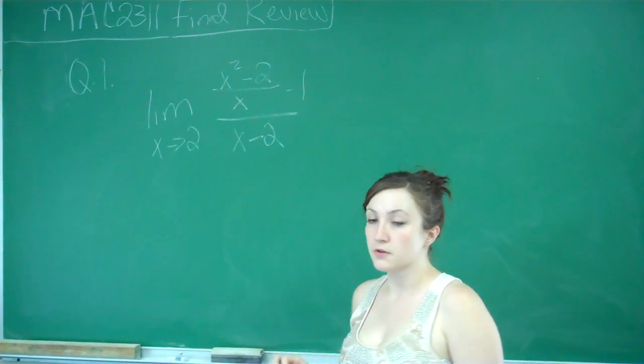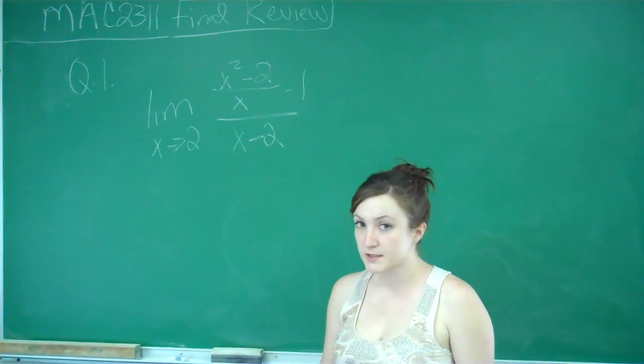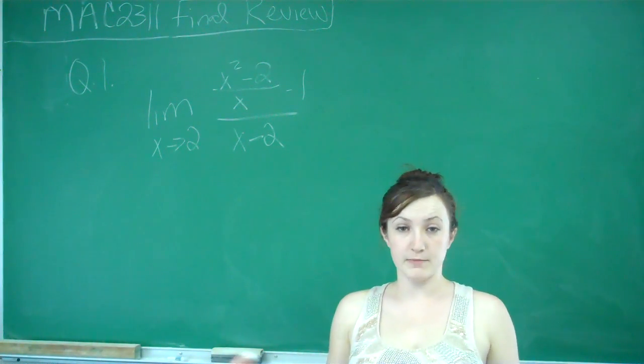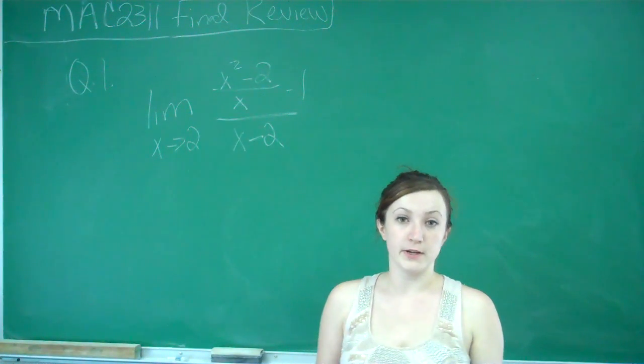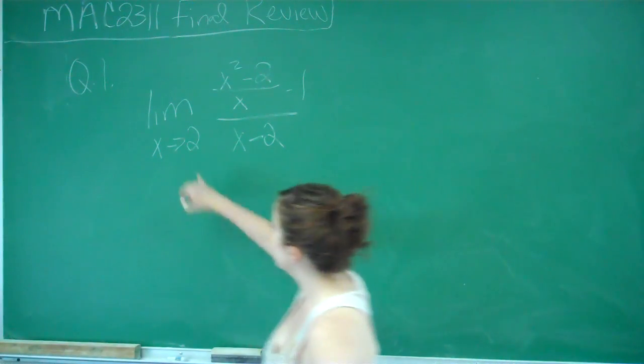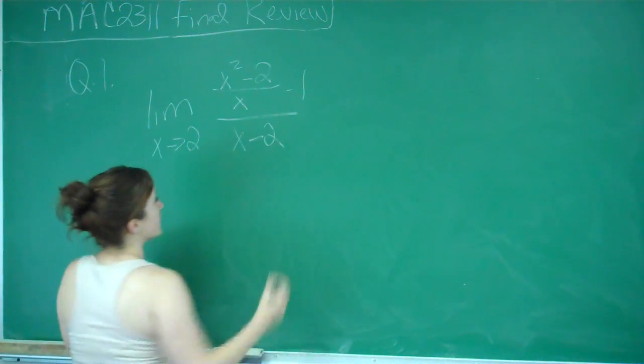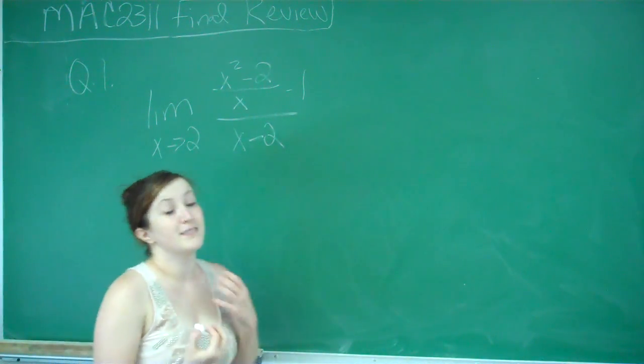So what we need to do first is check to see if we can just go ahead and plug it in for limits. We always want to see if substitution works, because that's going to be our quickest option. So if I plug in 2, however, I get a 0 here on one of our denominators, and obviously that can't work.